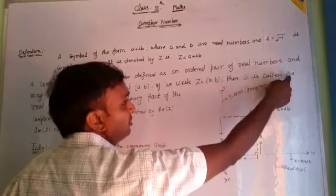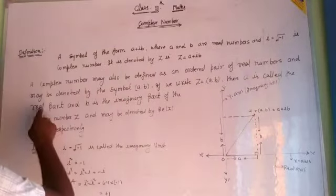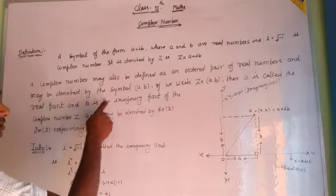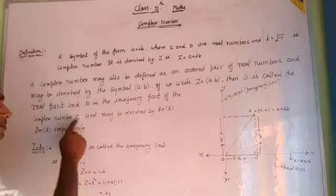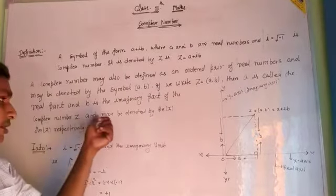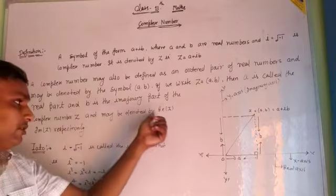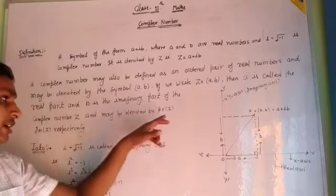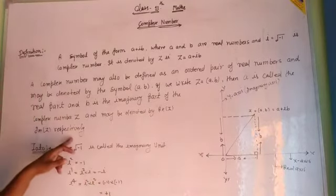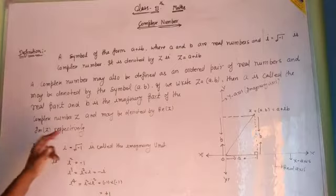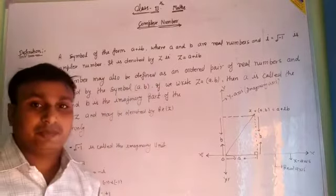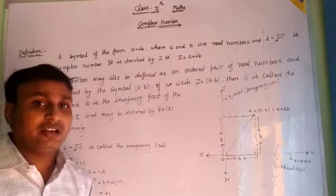then a is called the real part and b is called the imaginary part of the complex number z, denoted by Re(z) and Im(z) respectively. So a complex number is also an ordered pair of real numbers.